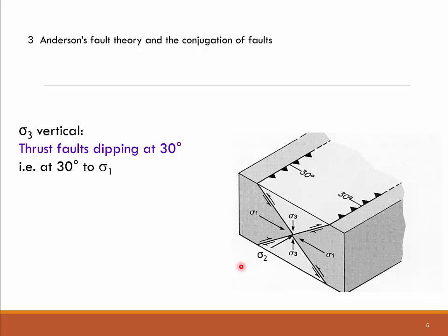If we place sigma 3 vertical, that puts sigma 1 and sigma 2 horizontal and produces fault planes that dip at 30 degrees. The angle between sigma 1 and the fault plane is 30 degrees — the theta angle — and this applies to both conjugate faults. This produces a dip angle of 30 degrees with opposite senses of shear.